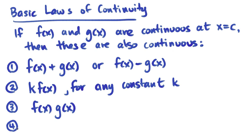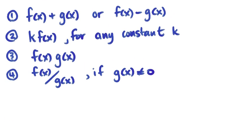And the fourth basic one is a quotient. If you divide the two functions that are continuous, you'll get a continuous function as long as g of x doesn't equal zero.